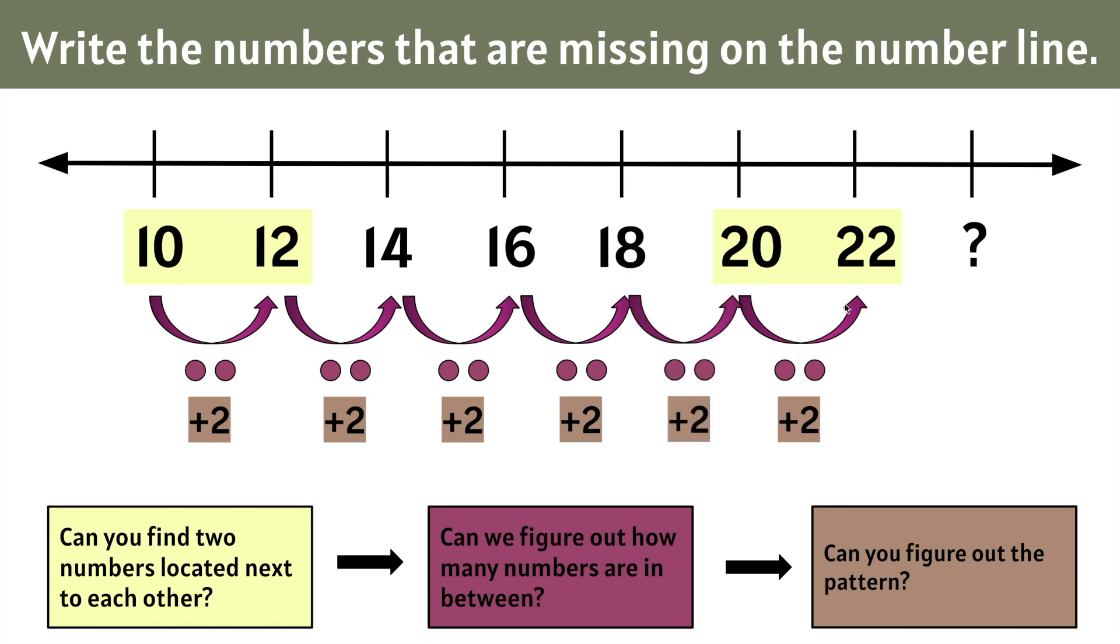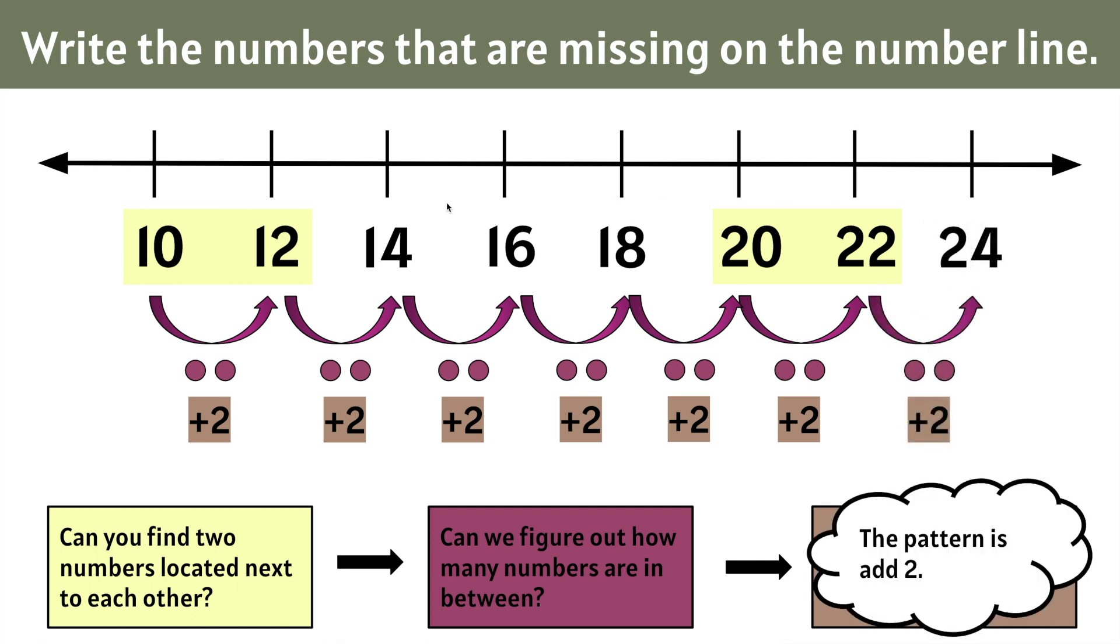Now let's jump to 22. Let's add 2 more because that's the pattern for this number line. 22 plus 2 is 24. The pattern for this specific number line is add 2. The pattern does not change.